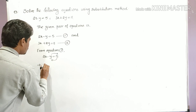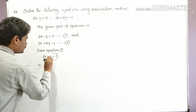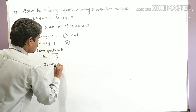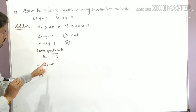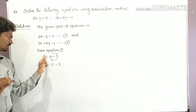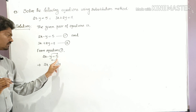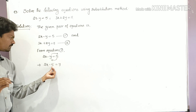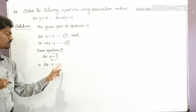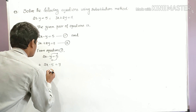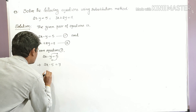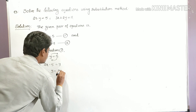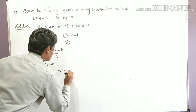So already 2x is there. Taking minus y to the right side and plus five to the left side: plus five becomes minus five, and minus y becomes plus y. Therefore, y is equal to 2x minus five. So y is equal to 2x minus five.